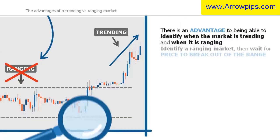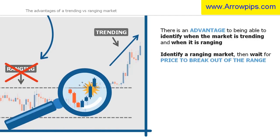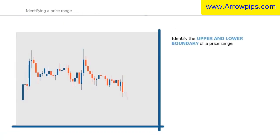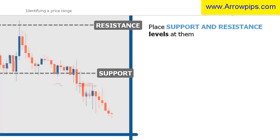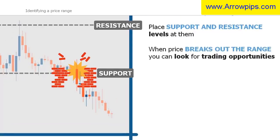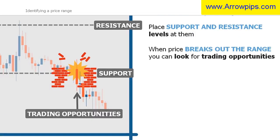Once you have identified a ranging market, you can wait until the price breaks out of that range before you start to look for trades. An effective method of determining a price range is to identify the upper and lower boundary and place support and resistance levels at them. When the price breaks out of the range, you can begin to look for trading opportunities.